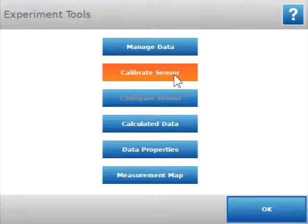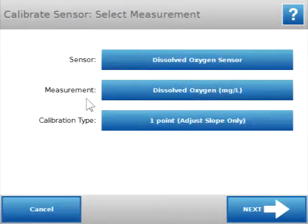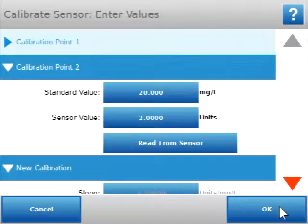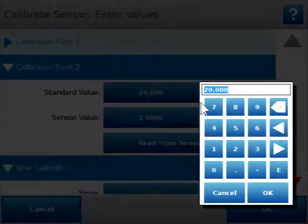Select Calibrate Sensor and make sure that the measurement dissolved oxygen in milligrams per liter is selected. Then click Next. We can now enter our calibration value into the standard value. Again, for my sample, it was 9.1 milligrams per liter.